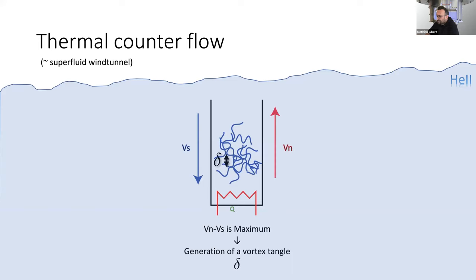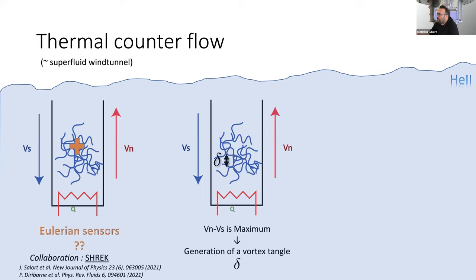If I switch on this heater, the normal fluid flows out of the pipe because it carries heat, and by mass conservation, the superfluid will enter this pipe. This maximizes the velocity difference between those two components, and therefore it generates a vortex tangle. This vortex tangle can be characterized by a single characteristic distance called delta in my talk, that is the inter-vortex spacing. So this is a very classical experiment.